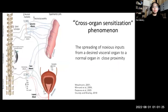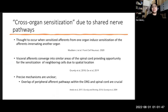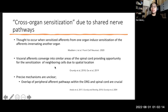Another theory explaining chronic pelvic pain is cross-organ sensitization — the spreading of noxious inputs from a diseased visceral organ to a normal organ in close proximity, thought to be due to a shared nerve pathway. This occurs when sensitized afferents from one organ induce sensitization of afferents innervating another organ. Visceral afferents converge into similar areas of the spinal cord, providing opportunity for sensitization of neighboring cells due to spatial location, though the precise mechanism remains unclear.